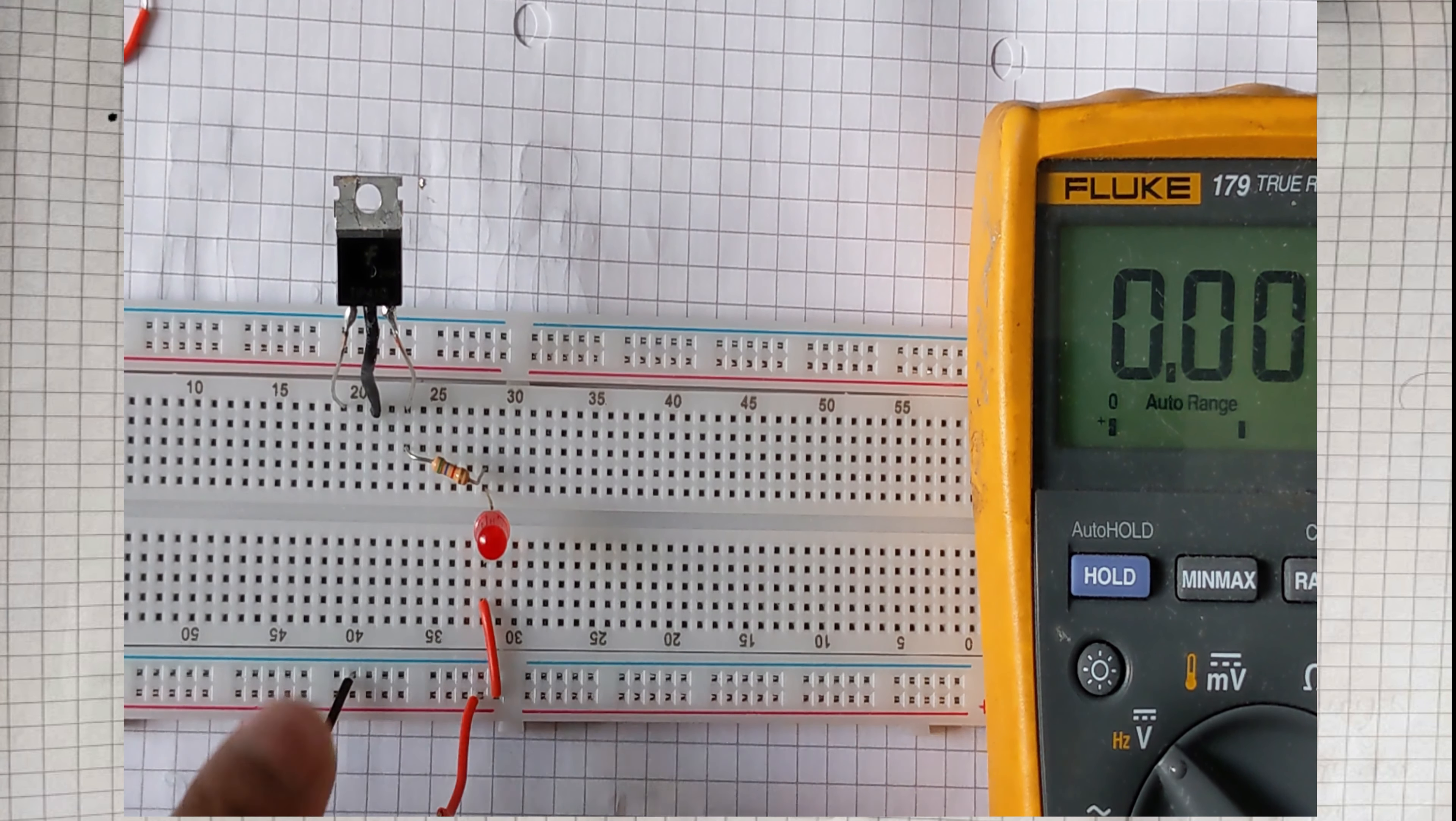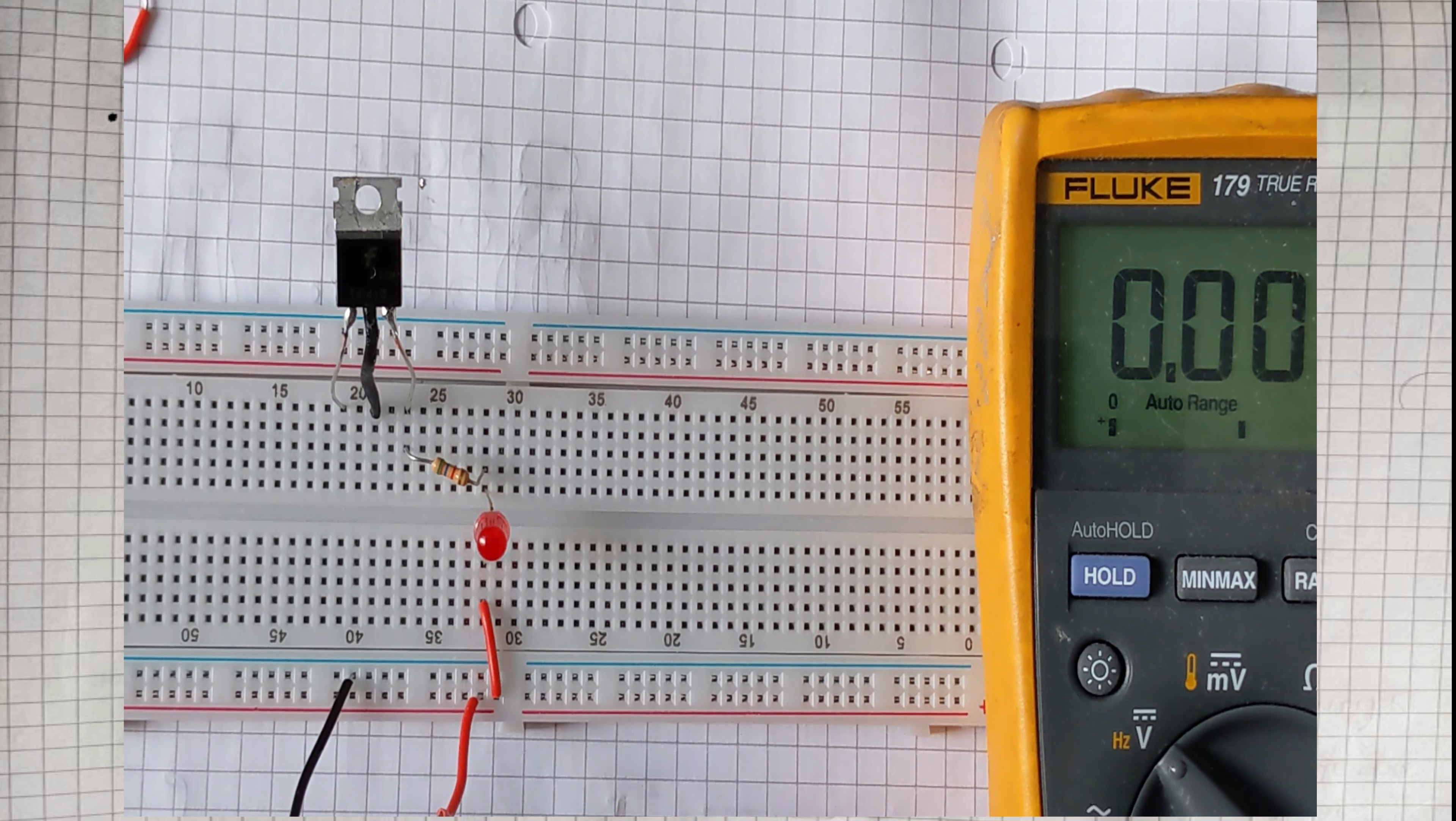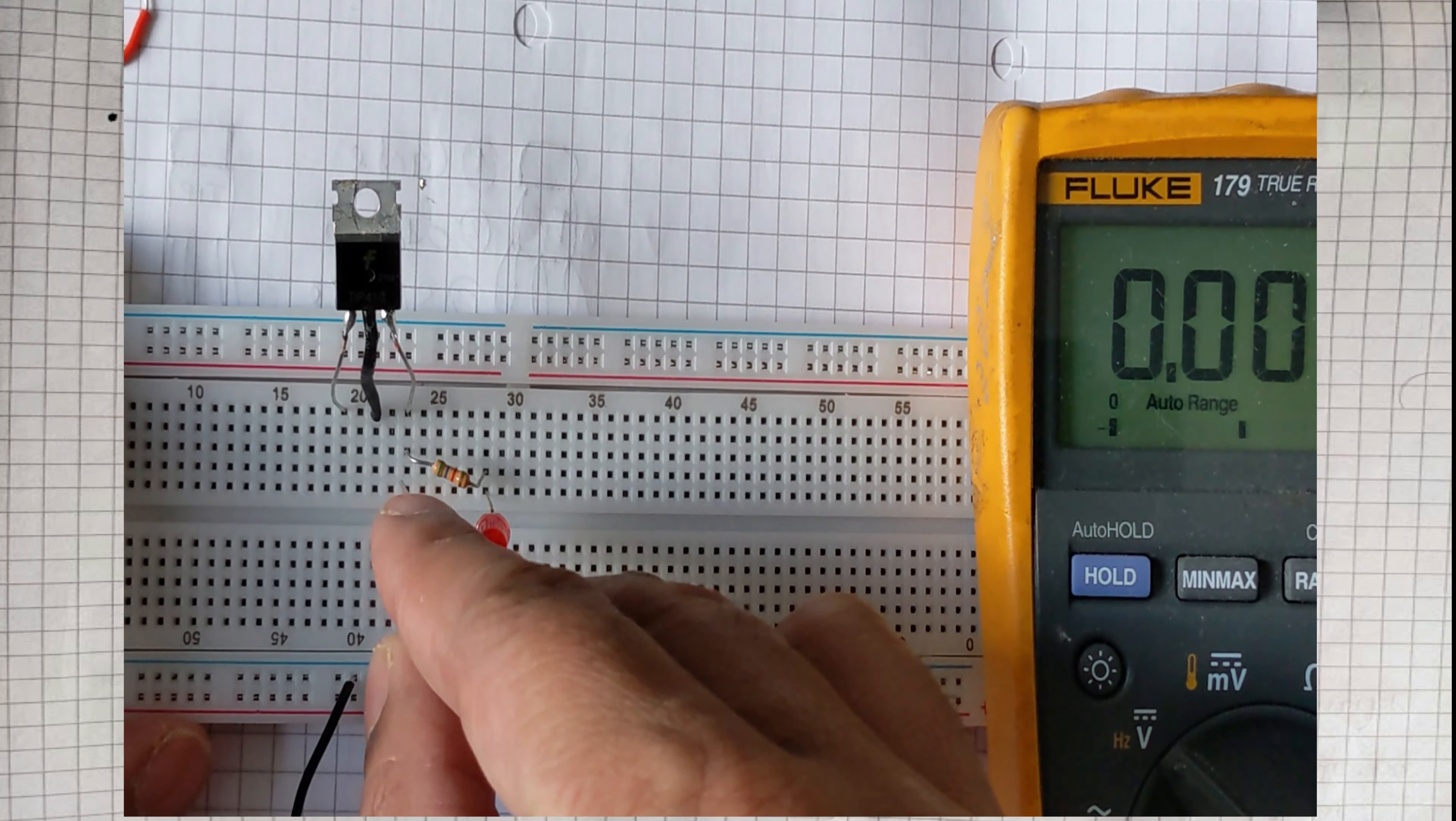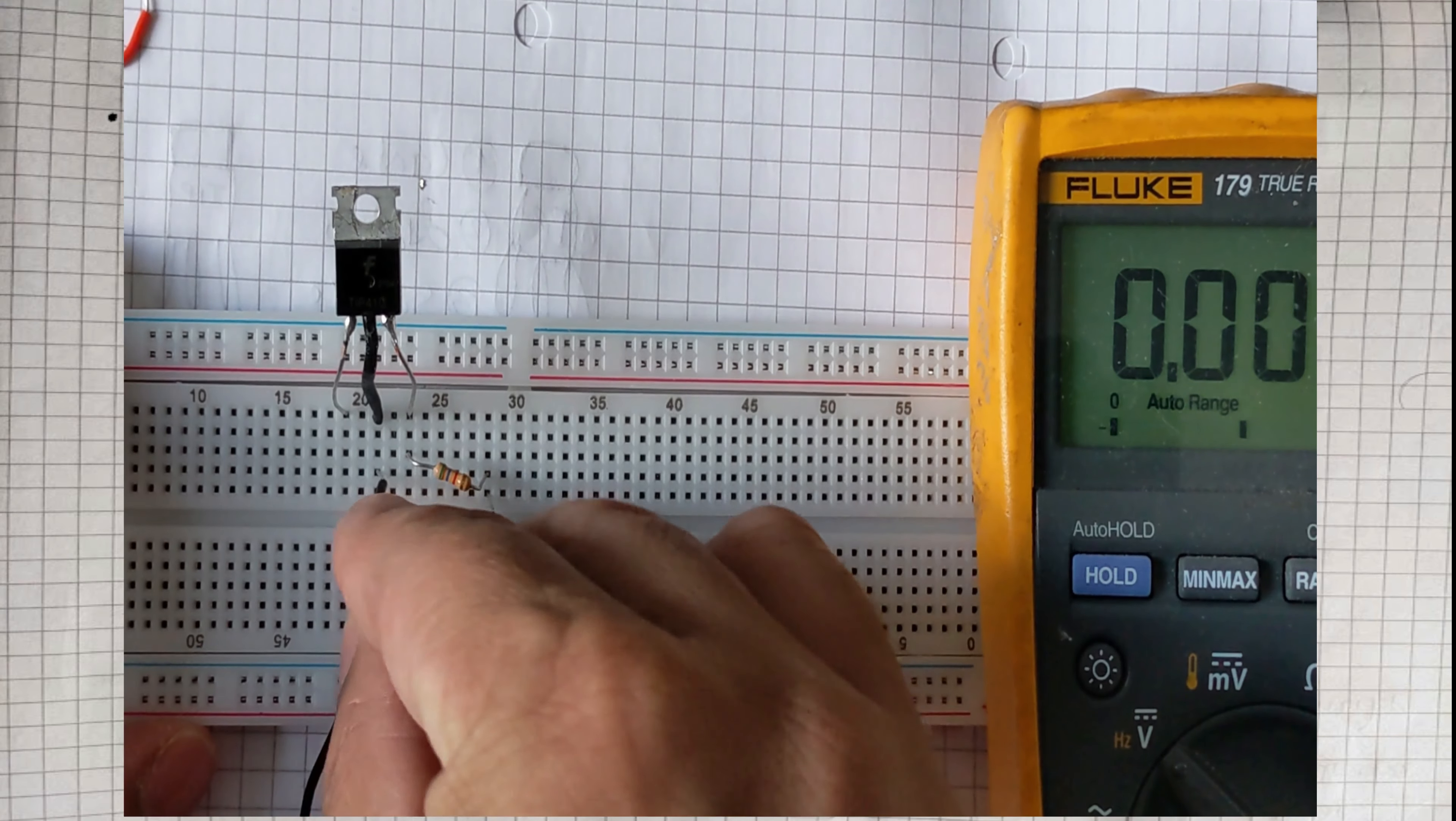As you can see at the moment I have replaced the ground. Basically the resistor is connected with pin number three. Pin number three is the emitter.